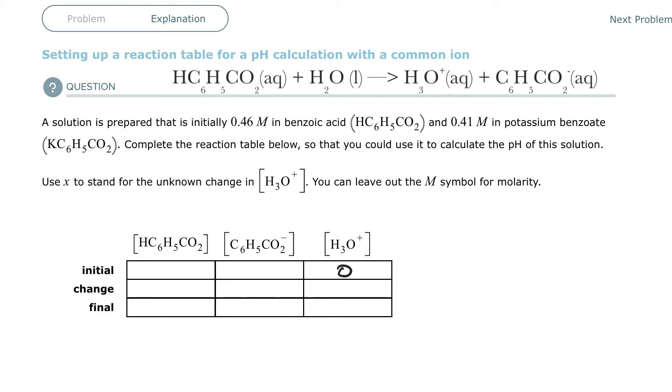Now, they're telling you what the initial molarities is of the benzoic acid, so it's going to be 0.46 molar. And the initial molarity of the benzoate ion is going to be 0.41 molar.